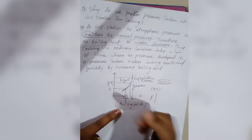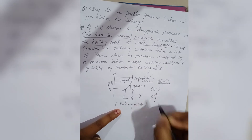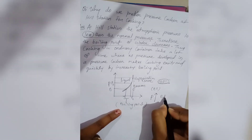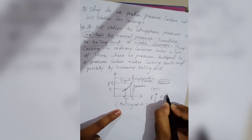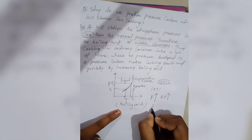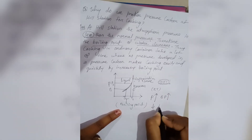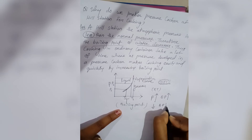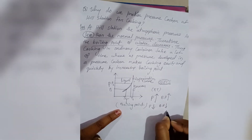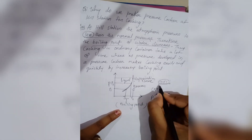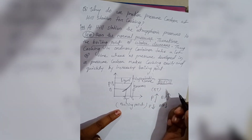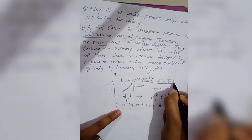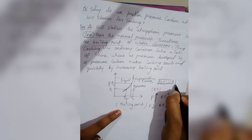From this phase diagram, if pressure increases, the boiling point of water also increases. If pressure decreases, the boiling point of water decreases.